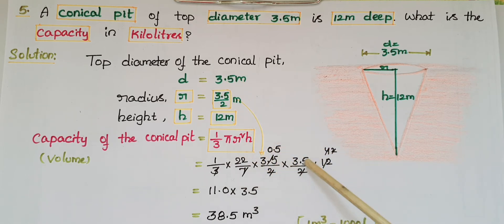That's (3.5/2) × (3.5/2) × 12. Simplifying by canceling the common factors: 7s cancel, 2s cancel. Then 22 × 0.5 = 11, and 11 × 3.5 = 38.5 m³.